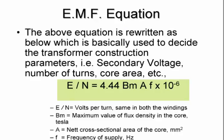If we rewrite that, we get E which is the volts per turn — E divided by N — equals 4.44 (the sine wave constant) times BM and A, where we've replaced flux with flux density times net cross-sectional area, and we still have the frequency. So now with this formula, we can select the core type, select the flux density, and start calculating the number of turns we need.